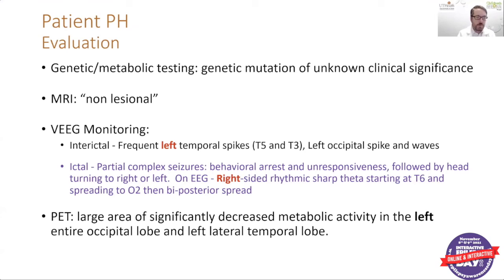Her MRI of the brain was determined to be non-lesional or normal, meaning there was no specific location seen on the MRI thought to be responsible for her seizure activity. We did scalp EEG monitoring, and she was noted to have frequent left temporal spikes, as well as left occipital spike and wave discharges. Interestingly, the ictal activity — the seizure onset — showed behavioral arrest and unresponsiveness, then head turning either to the right or the left. On EEG during the seizure, she had right-sided rhythmic activity over the right temporal area spreading to the right occipital area and bilateral posterior areas.